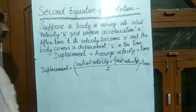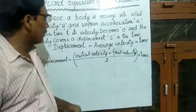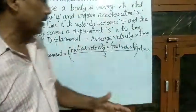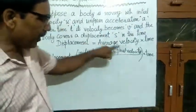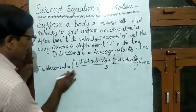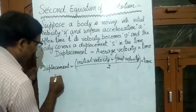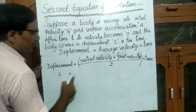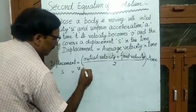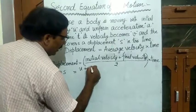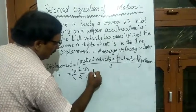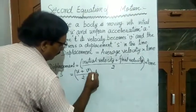Now, displacement is denoted by S, initial velocity is denoted by U, and final velocity is denoted by V. So we can write: S is equal to U plus V by 2, multiplied by T.